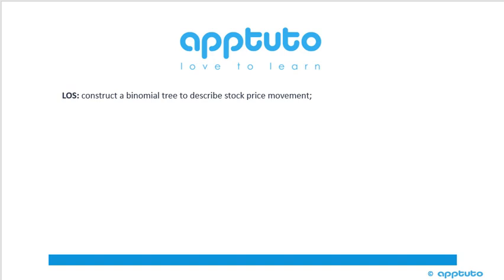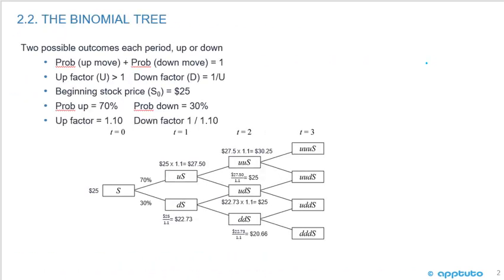This LOS is to construct a binomial tree to describe stock price movement. In a binomial tree, there are two possible outcomes for each period, either up or down. That's why we call it binomial.